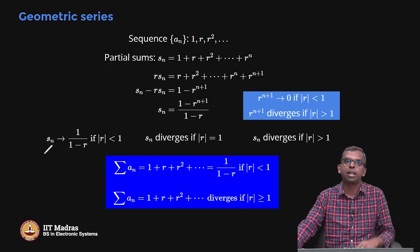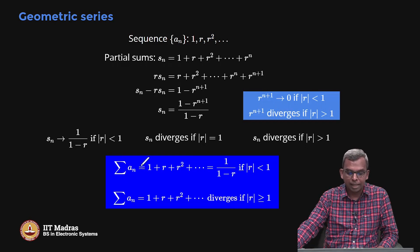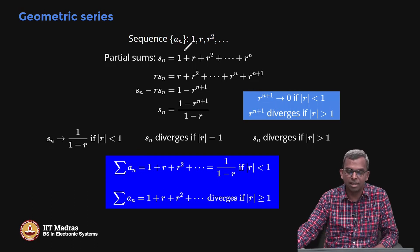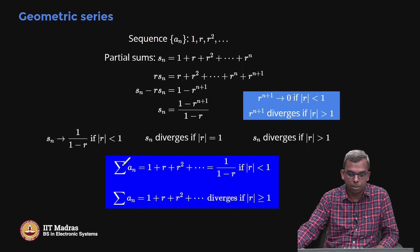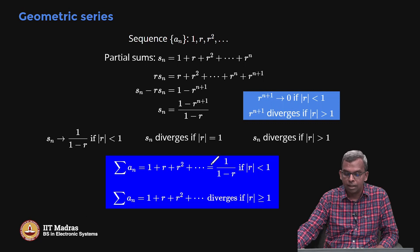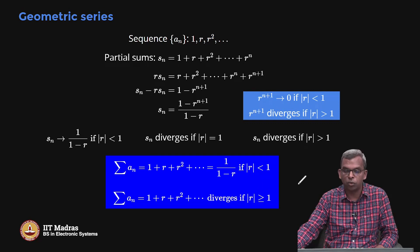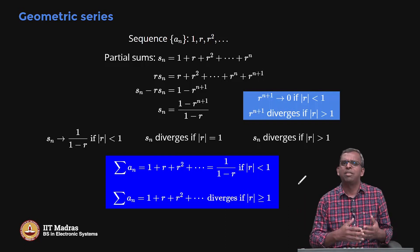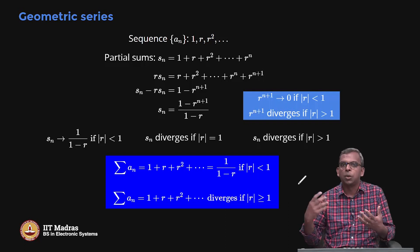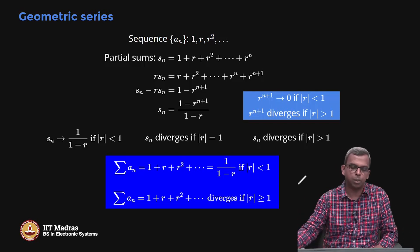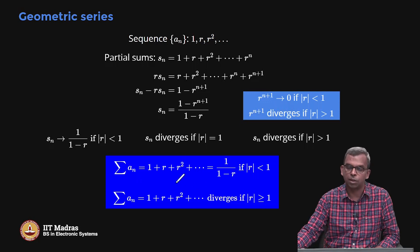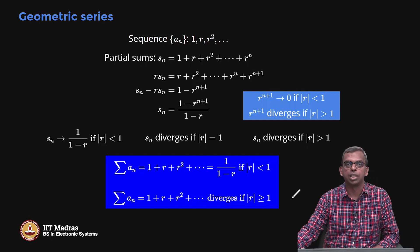This is a very, very famous summation formula in mathematics. You learn it at a young age and here is a very simple proof for it. The sequence a_n = {1, r, r², ...}. The series Σa_n is 1 + r + r² + ... and we just saw this series converges to 1/(1−r) if |r| < 1, and diverges if |r| ≥ 1.